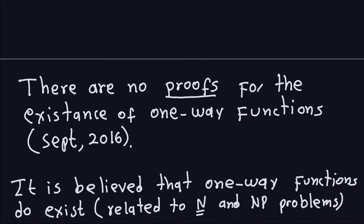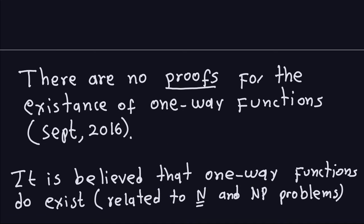Of course there is no proof, but it is believed that one-way functions do exist. If they don't exist, that will be a big trouble for cryptography. The problem of proving that one-way functions actually exist is related to P and NP problems — a very famous problem in computer science. So the existence of one-way functions is a very important problem.